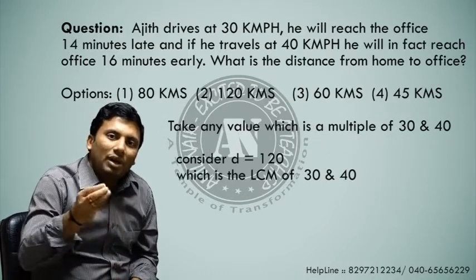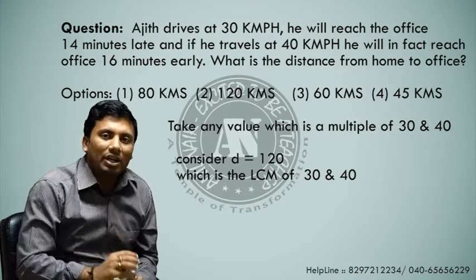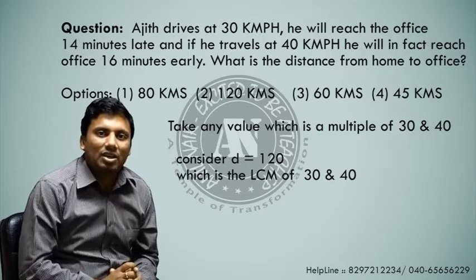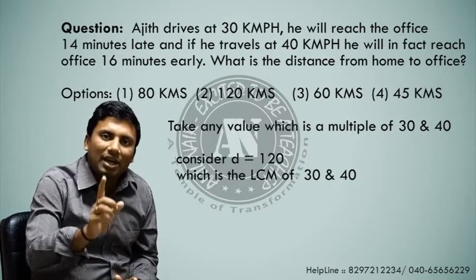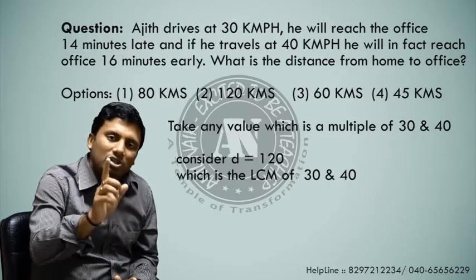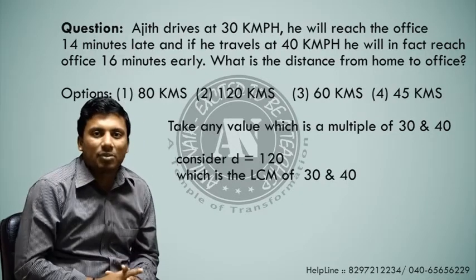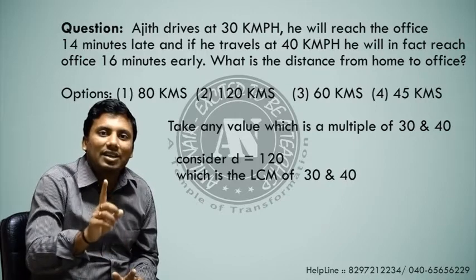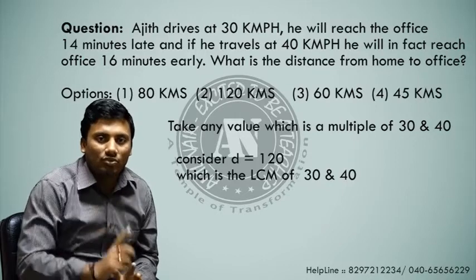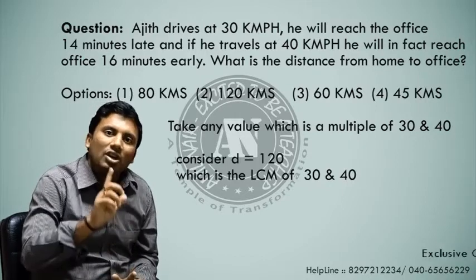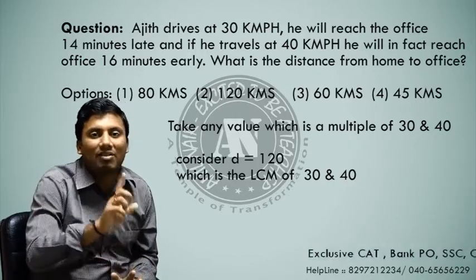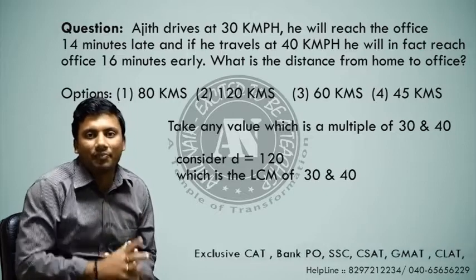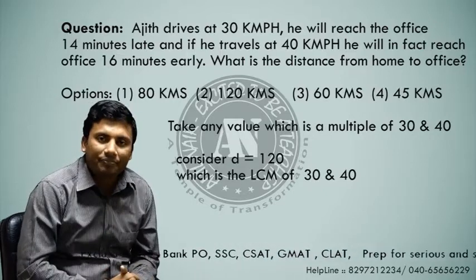Even if you multiply 30 by 40, you still get the same answer. You can take any integer value as d — still you will get the same answer. Because he is travelling some distance, we cannot take 0, as that would make all values 0.